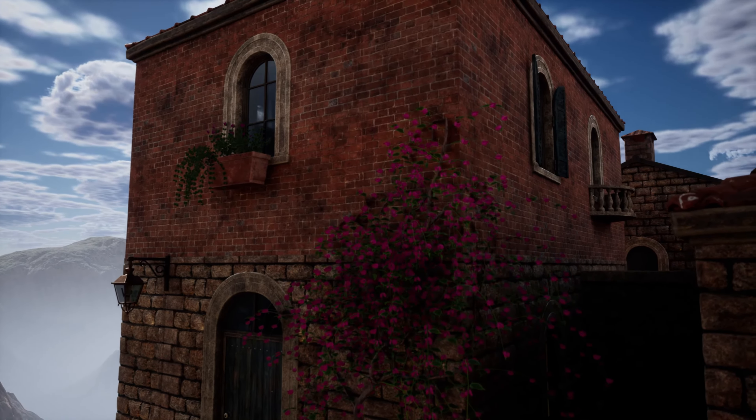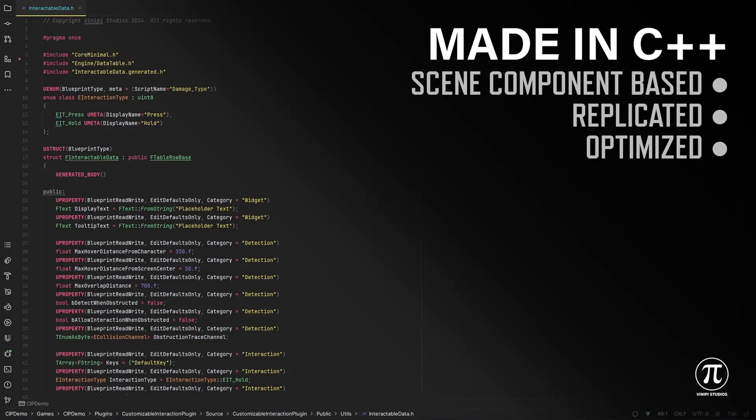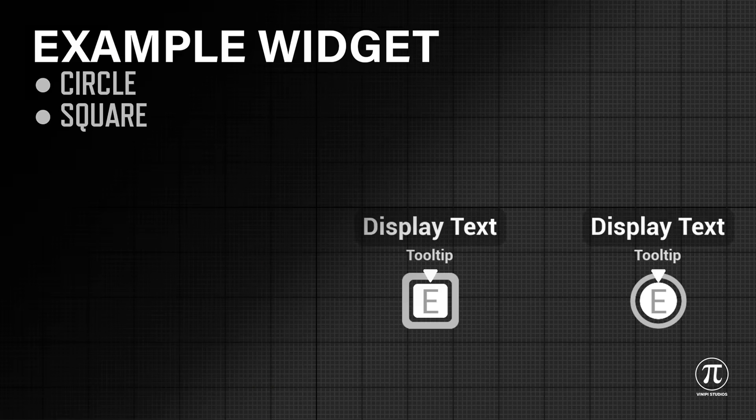Next we have the Customizable Interaction Plugin. This allows you to seamlessly integrate an interaction system with customizable detection modes, widgets and more. It's made in C++ for both optimization and advanced logic. This introduces an easily implementable interaction plugin encompassing numerous customization choices, including various interaction modes, distinct detection modes, a customizable widget and much more. All the options can be customized via data tables.